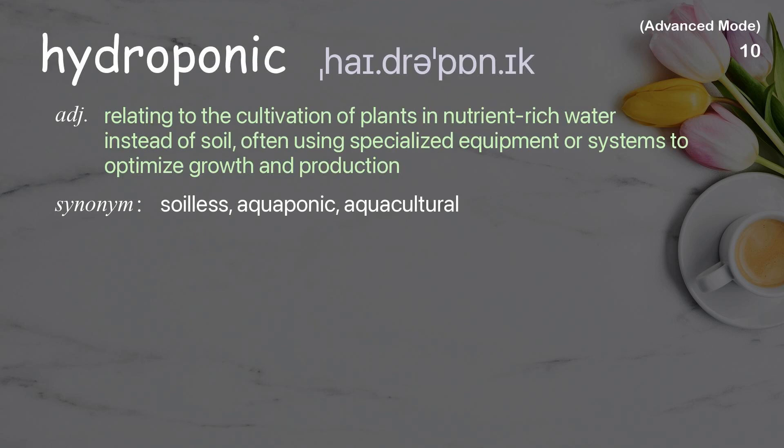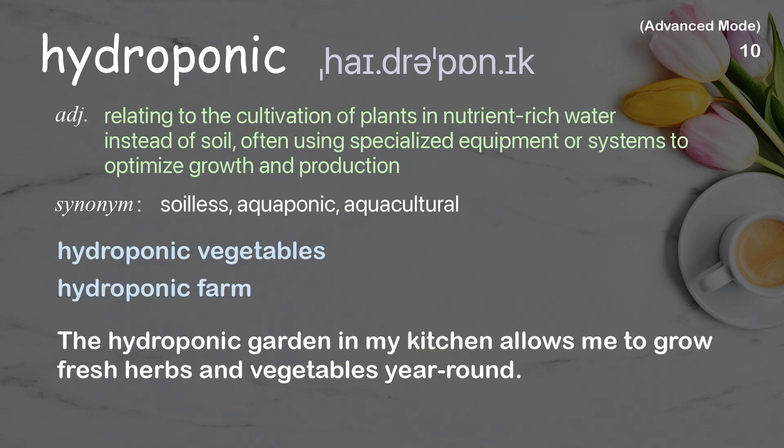Hydroponic: relating to the cultivation of plants in nutrient-rich water instead of soil, often using specialized equipment or systems to optimize growth and production. Examples: hydroponic vegetables; hydroponic farm. The hydroponic garden in my kitchen allows me to grow fresh herbs and vegetables year-round.